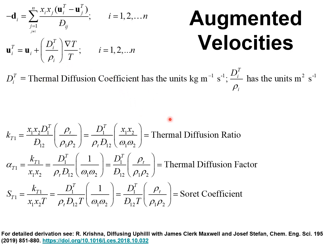Besides the thermal diffusion coefficient, other parameters describing the thermal diffusion effect have been introduced in the published literature on the Soret effect. They include the thermal diffusion ratio, thermal diffusion factor, and the Soret coefficient. For a detailed derivation, consult my paper published in Chemical Engineering Science in 2019. The derivations are available in the supplementary material accompanying that publication.